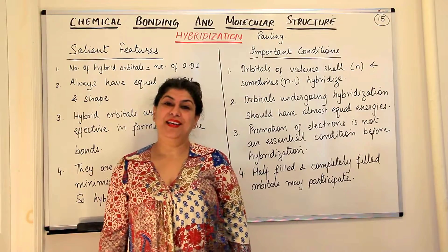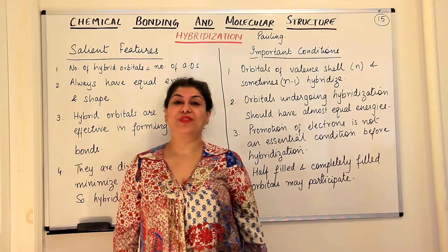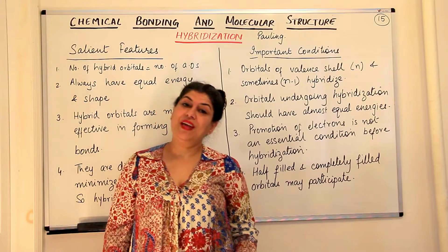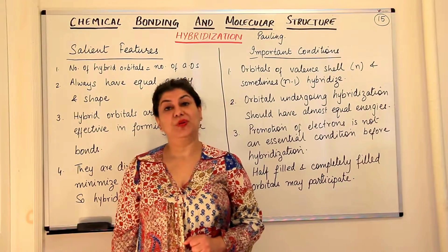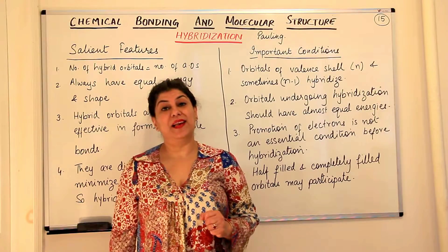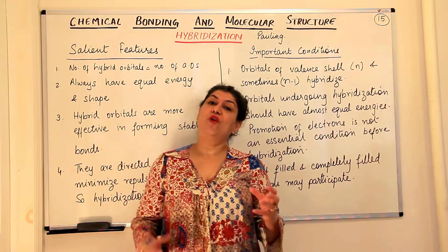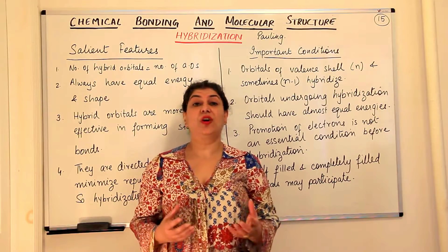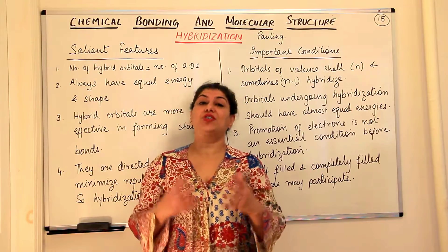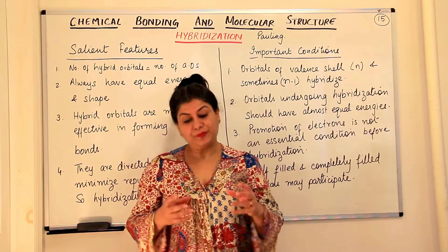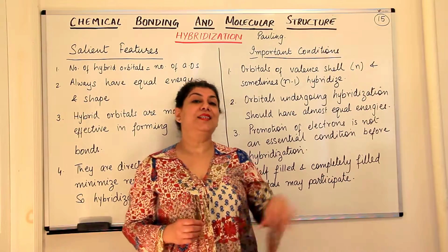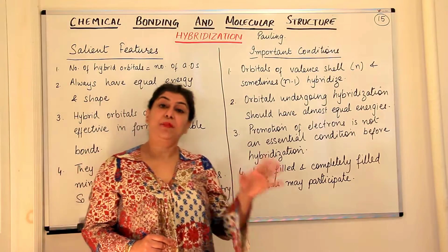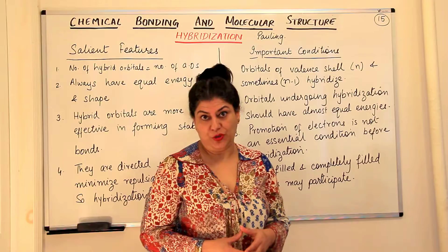Hello, I am Sima and welcome to part 15 of the chapter Chemical Bonding and Molecular Structure. We have been discussing the Valence Bond theory given by Heitler and London, which talked of overlapping of orbitals. The idea of orbital overlap alone was not enough to explain the structure of molecules. Therefore, the scientist Pauling modified it further and gave the concept of hybridization, which completed the Valence Bond theory.